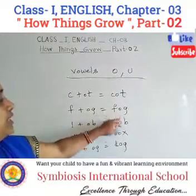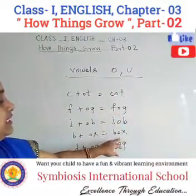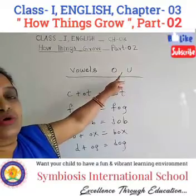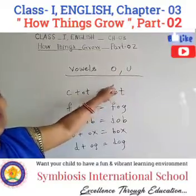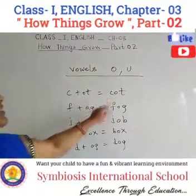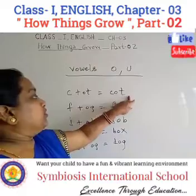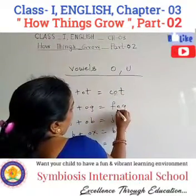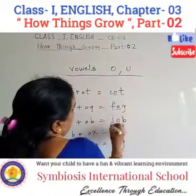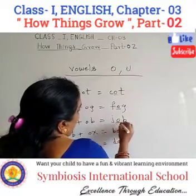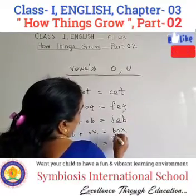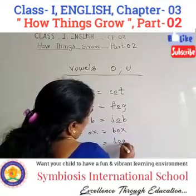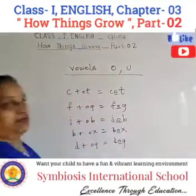These are all words using vowel O. When we use vowel O: in COD, O is the vowel; in FOG, O is the vowel; in JOB, O is the vowel; in BOX, O is the vowel; in DOG, O is the vowel.